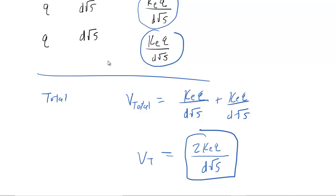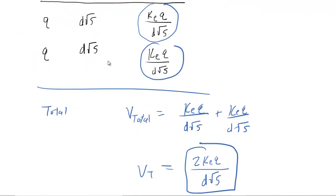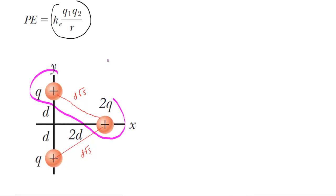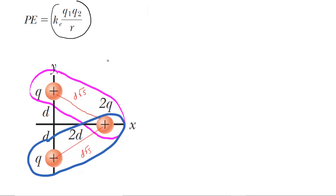Moving on to part B, it also wants a symbolic expression — this time for the total electric potential energy of the charge marked 2Q. The electric potential energy between two charged particles is given by K_E times q1 times q2 over r. We have to apply that equation twice: once for the interaction between 2Q and the upper charge Q, and once for the interaction between 2Q and the lower charge Q.